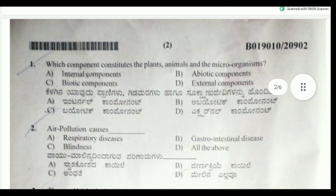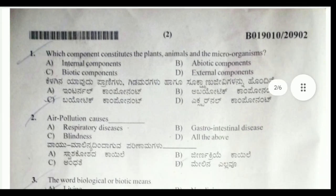The first question is: which component constitutes the plants, animals and microorganisms? The correct answer is option C, biotic component.